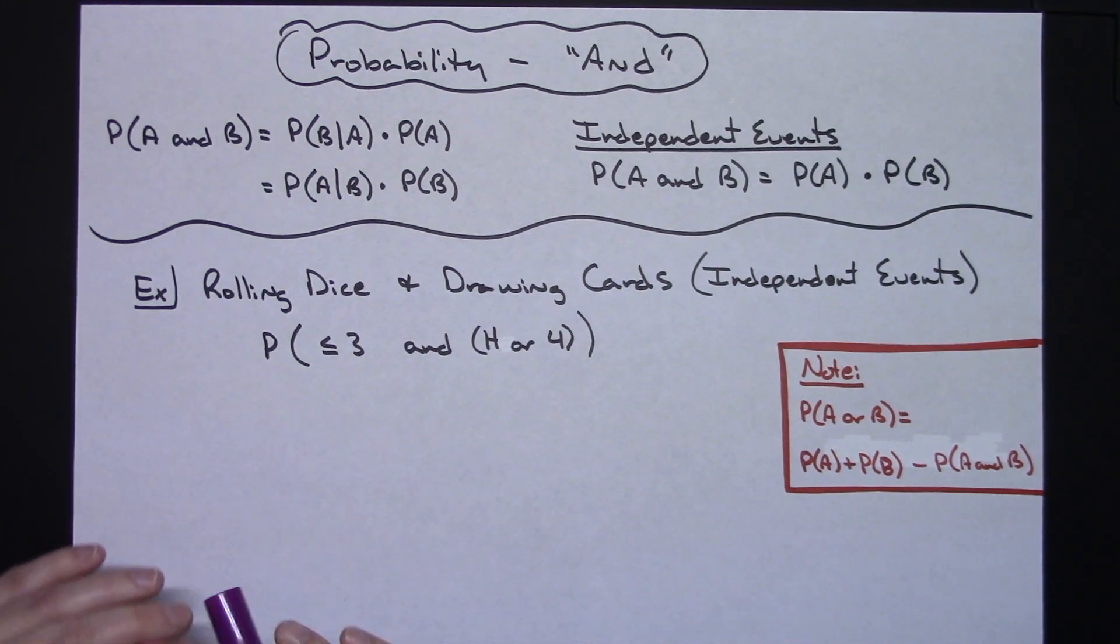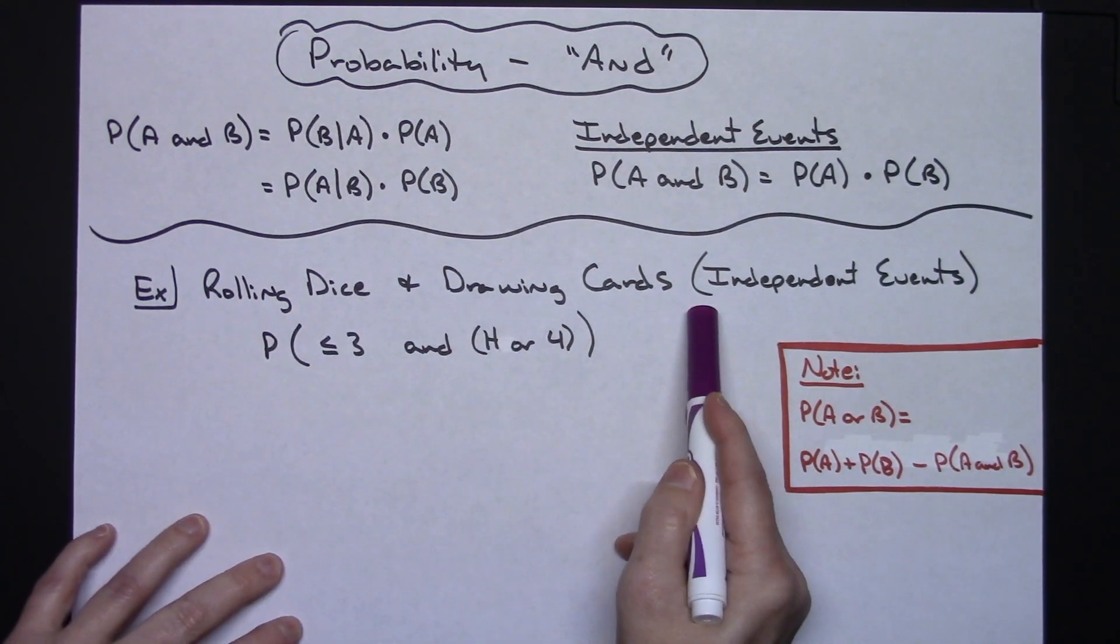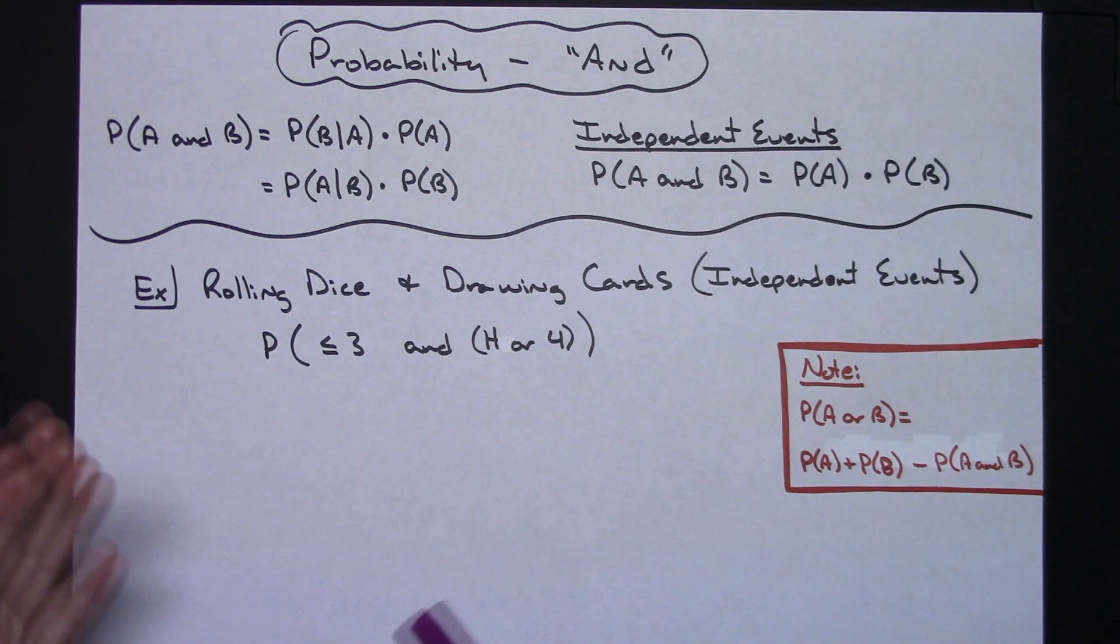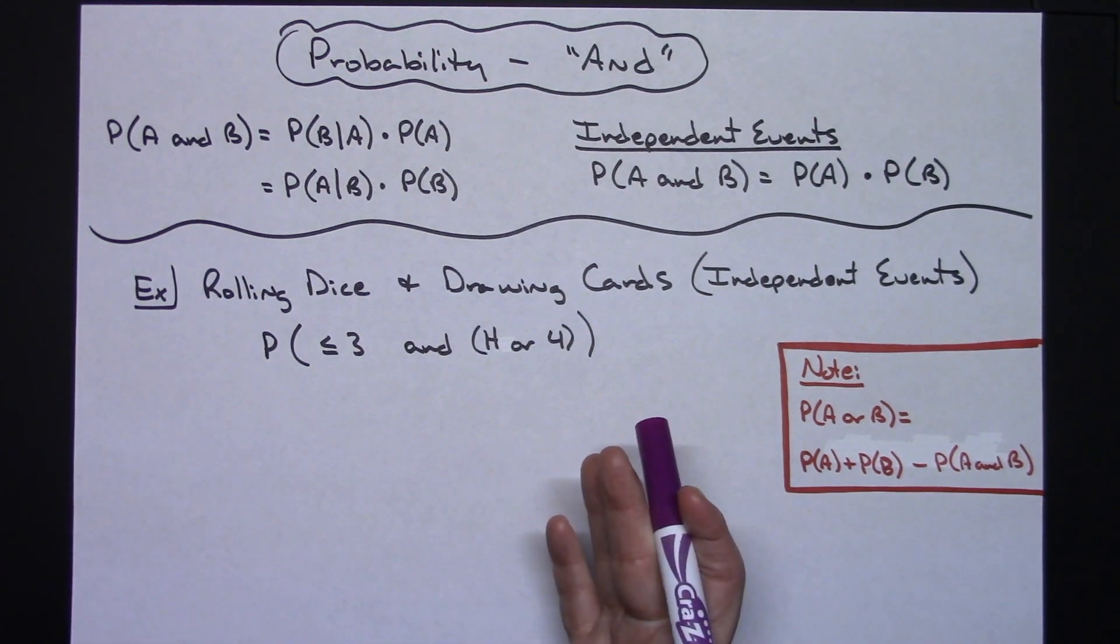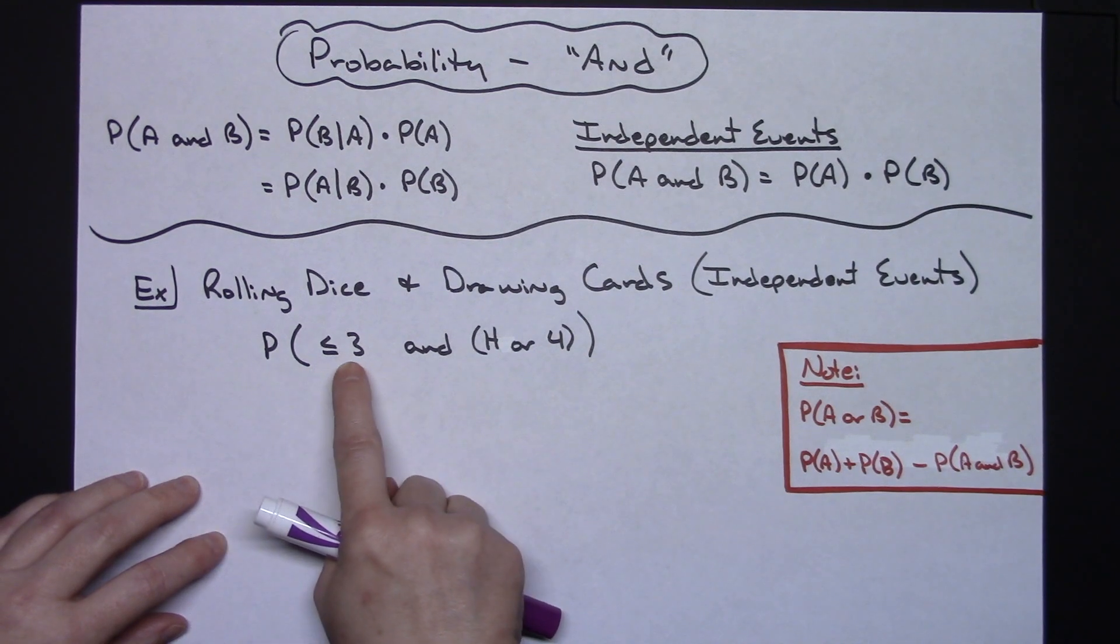In this example that I'm going to work out, we have an example of independent events. We've got rolling a dice and drawing some cards. Clearly they are independent events because one event does not affect the other one. I want to know what the probability is of rolling a number less than or equal to three and drawing a heart or a four.